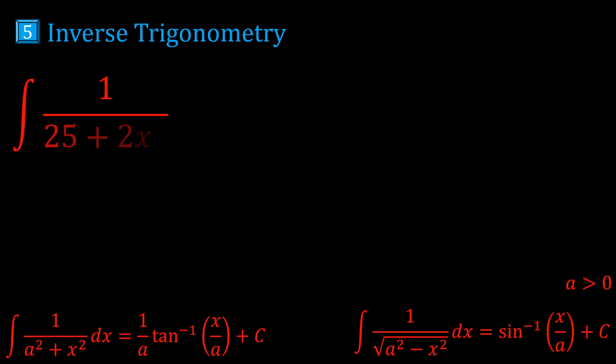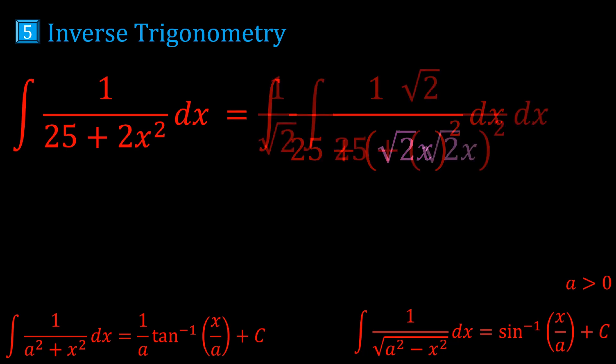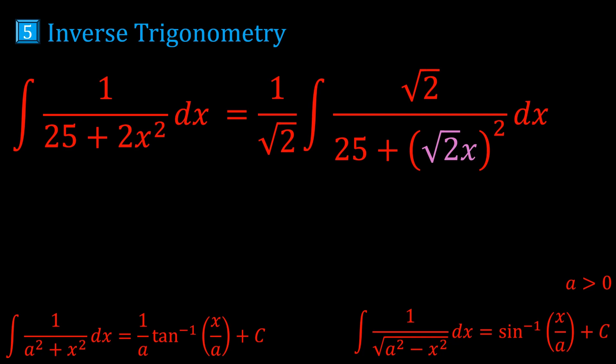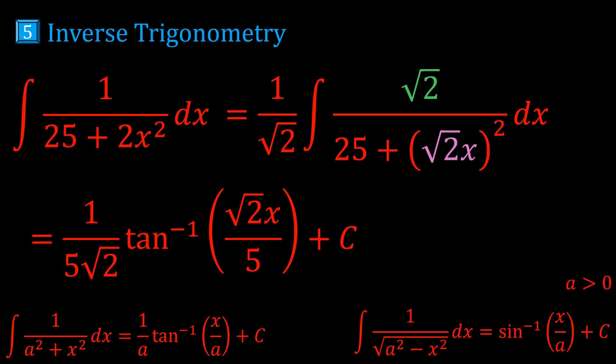Next we have the integral of 1 over (25 + 2x²). We write 2x² as (√2 · x)². So now it's in the form 1 over (a² + something²), where a = 5. The derivative of √2 · x is just √2, so we introduce √2 and divide by √2. The answer is 1/√2 · (1/5) arctan(√2 · x / 5). Eventually you want to get to the level where this is so easy it's second nature.